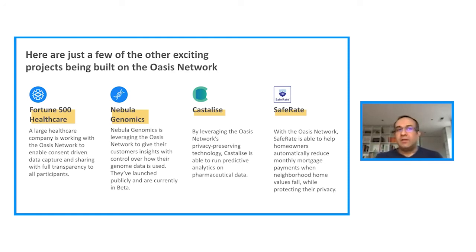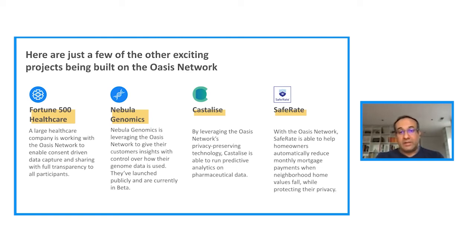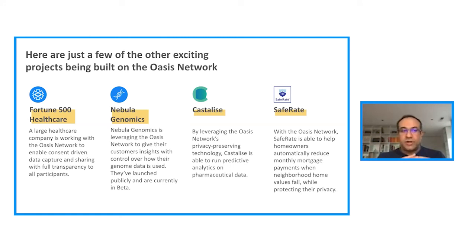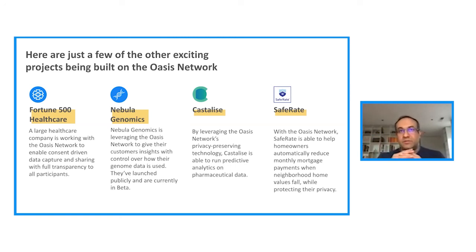Here are a few other exciting projects being built on the Oasis network. A Fortune 500 healthcare company is using the Oasis network to enable consent-driven data capture and sharing with full transparency to all participants. Nebula Genomics is using the Oasis network to give their customers insights with control over how their genomic data is used — they've launched publicly and are currently in beta. Castellese is using Oasis's privacy-preserving technology to enable machine learning workloads, building an execution environment for ML training and predictive analytics. SafeRate is using the Oasis network to enable mortgage seekers to reduce their mortgage rates based on neighborhood values, matching investors and market seekers — all enabled by the unique privacy-preserving capabilities of the Oasis network.